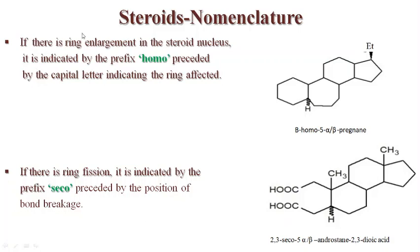If there is ring enlargement in the steroid nucleus, it is indicated by the prefix 'homo' preceded by the capital letter of the ring affected. Here the B ring has become seven-membered, so it is represented as B-homo. With an ethyl group present and the pregnane nucleus, the name is B-homo-5α/β-pregnane.